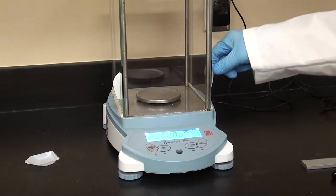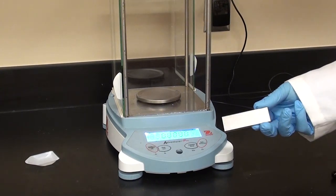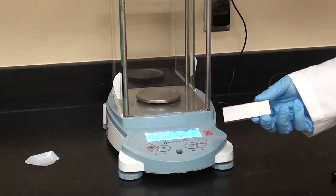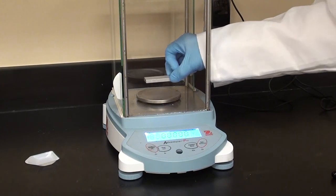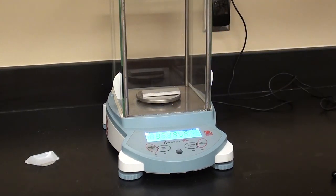Now we're going to weigh each of these. This is the aluminum block and we're also going to get a volume of this so we can get the density. We just go ahead and stick it on and then we record all the available digits off the balance. We don't estimate it, we just copy down exactly what we see there.